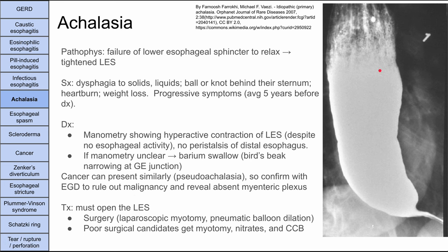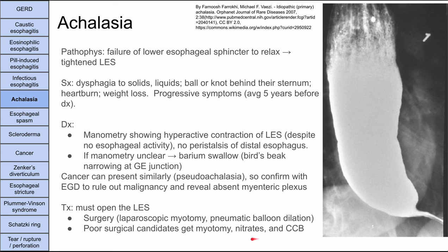Treatment is to open the lower esophageal sphincter. Surgery via laparoscopic myotomy is preferred. Pneumatic balloon dilation is another option. If the patient is not a surgical candidate, nitrates and calcium channel blockers can be used, though these don't work as well.